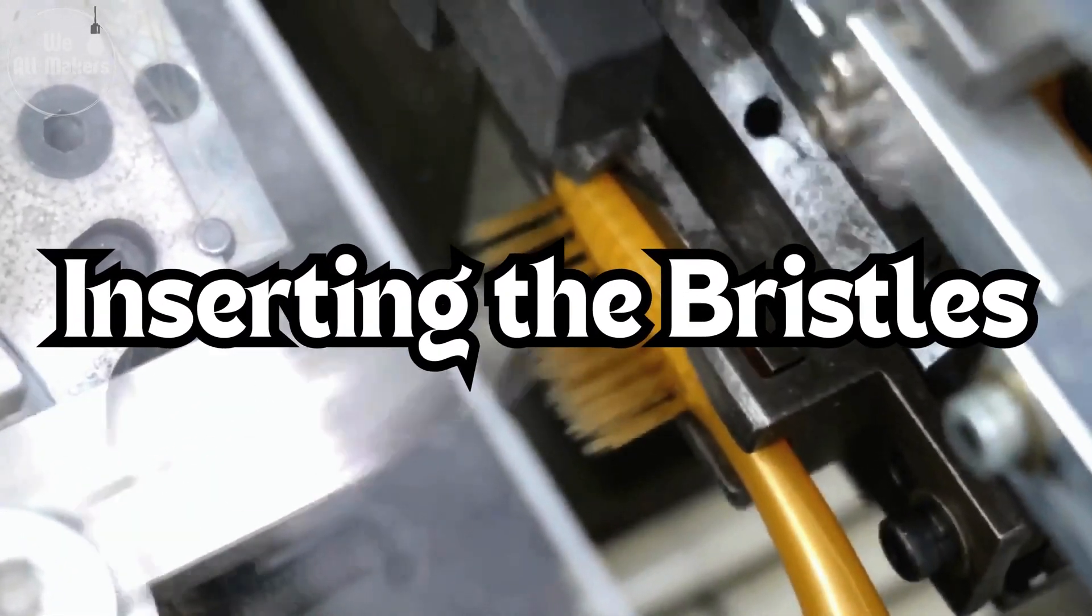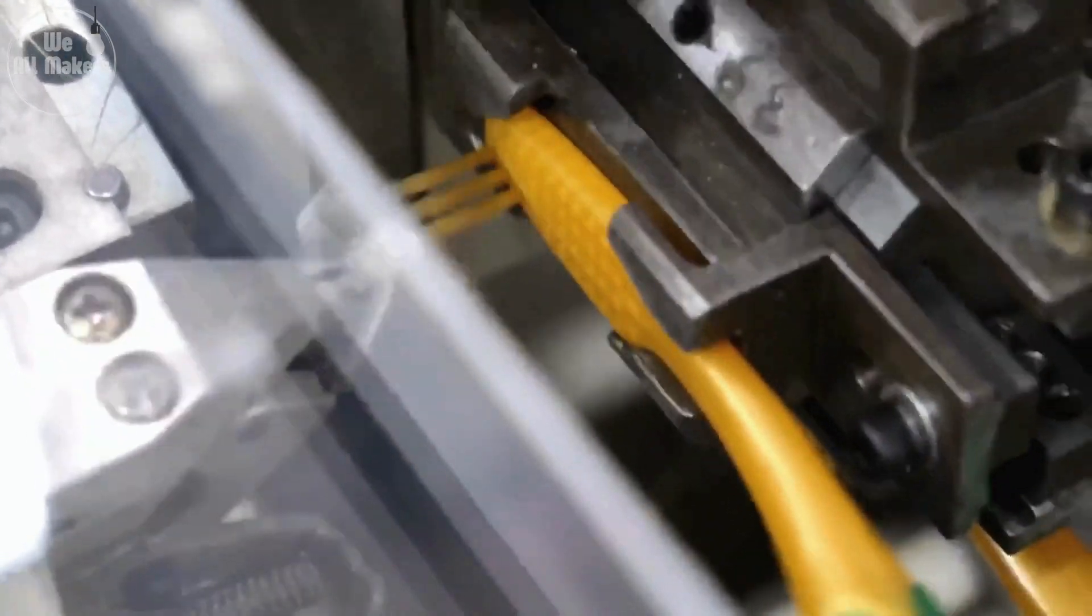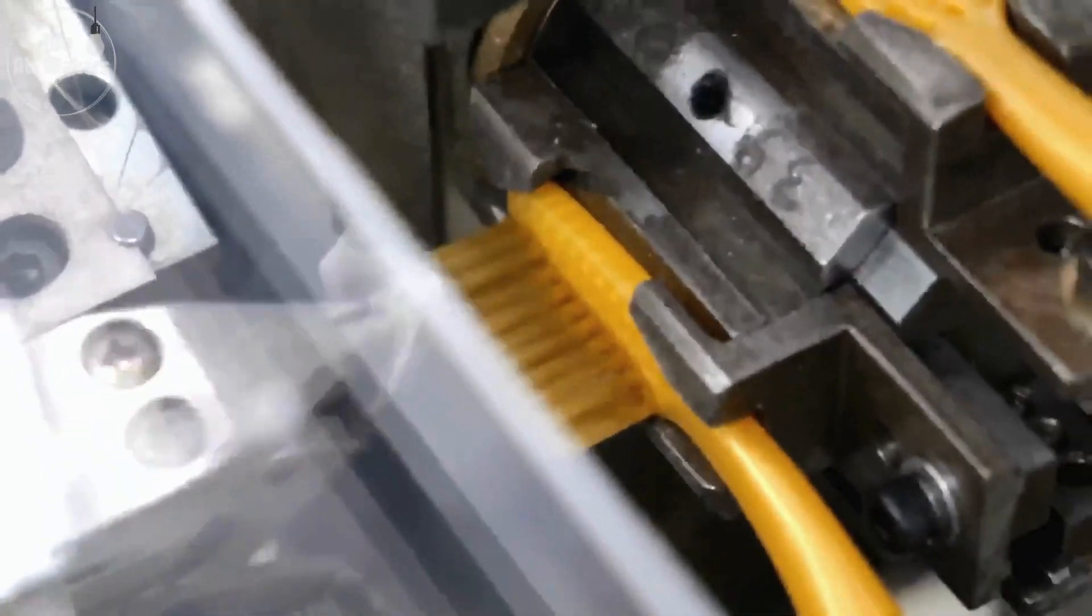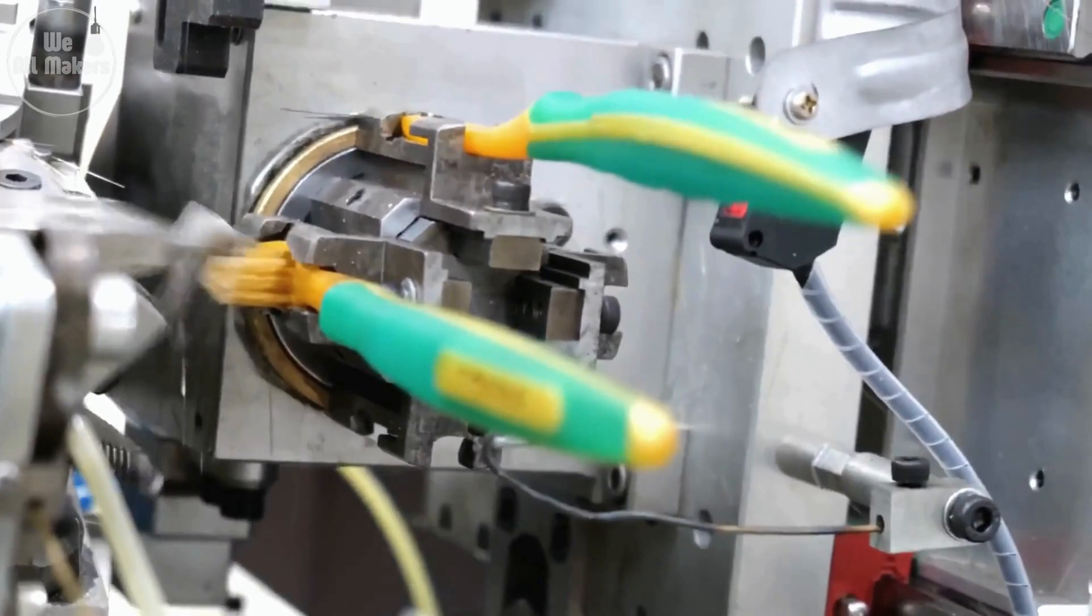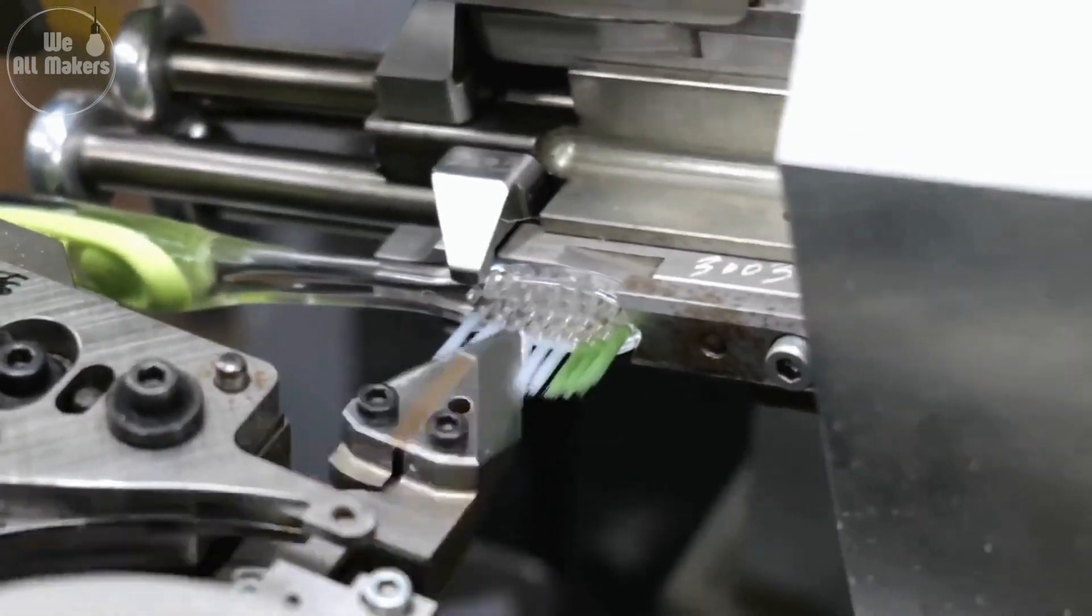Step 4: Inserting the bristles. Now, the bristles need to be attached to the handle. Machines place bunches of bristles into tiny holes in the brush head with incredible speed and precision. These machines work so fast, it's almost like watching a magician perform a trick. The bristles are then securely fastened so they don't come loose while you're brushing.